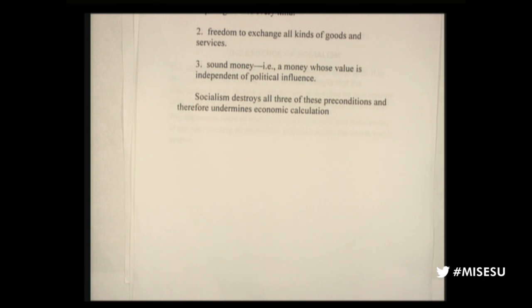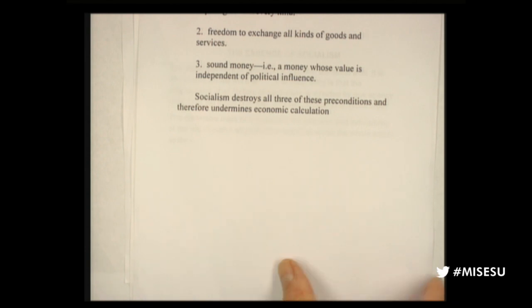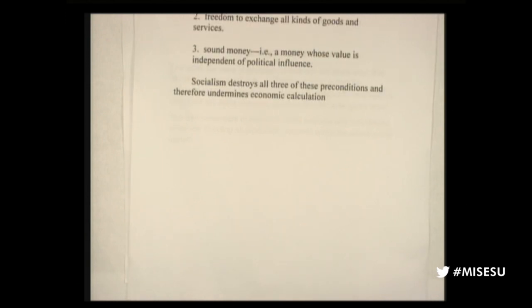Finally, Mises says there has to be a sound money — a money whose value is independent of political influence. In a system where you don't have sound money, which is almost every country in the world today, you are taking steps towards socialism because you're causing calculational chaos. Unstable or inflationary money doesn't give you a true accounting of costs and prices. Mises concluded simply: socialism destroys all three of these preconditions and therefore undermines economic calculation and abolishes rational allocation of resources.